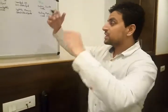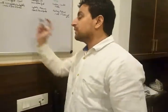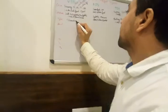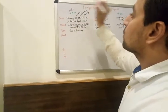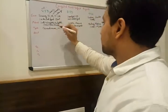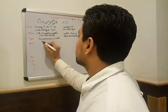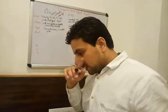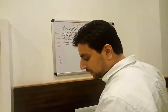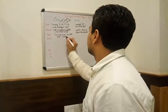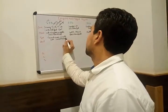Now the types: for ventricular septal defect, the types include perimembranous — which is the most common type — muscular type, inlet type, and conoventricular type. VSD itself is the most common congenital heart defect overall, and perimembranous is the most common subtype of VSD.